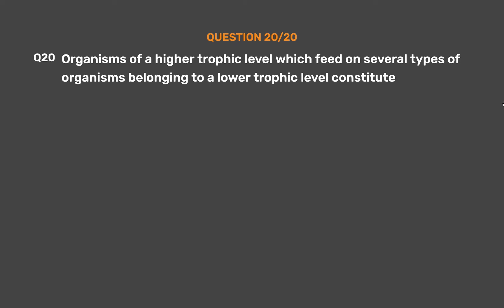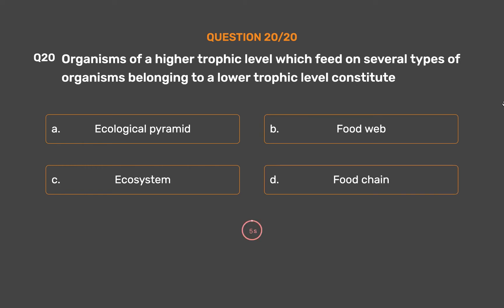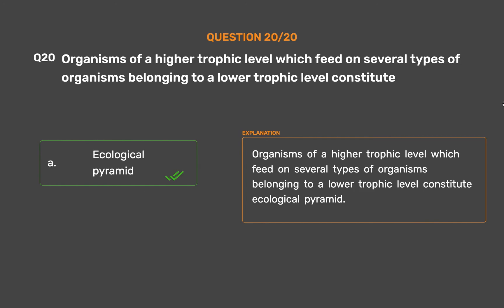Question number 20: Organisms of a higher trophic level which feed on several types of organisms belonging to a lower trophic level constitute — Option A: Ecological pyramid, Option B: Food web, Option C: Ecosystem, Option D: Food chain. The correct answer is Option A, Ecological pyramid. Organisms of a higher trophic level feeding on several types of lower trophic level organisms constitute an ecological pyramid.